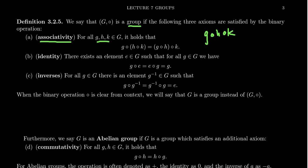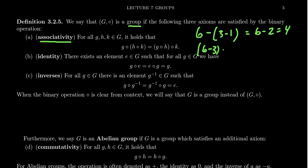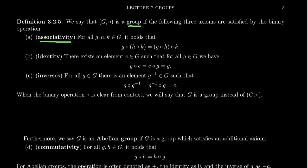I want to caution you that associativity is not automatic. If we think of integers with the operation of subtraction — a binary operation — subtraction is not associative. For example, (6 minus 3) minus 1 gives 6 minus 2, which equals 4. But 6 minus (3 minus 1) equals 6 minus 2... that is, 3 minus 1, which equals 2. They don't match. Subtraction is non-associative, as is division and the cross product in R3. Not every operation is associative, but to be in a group, we do require associativity.